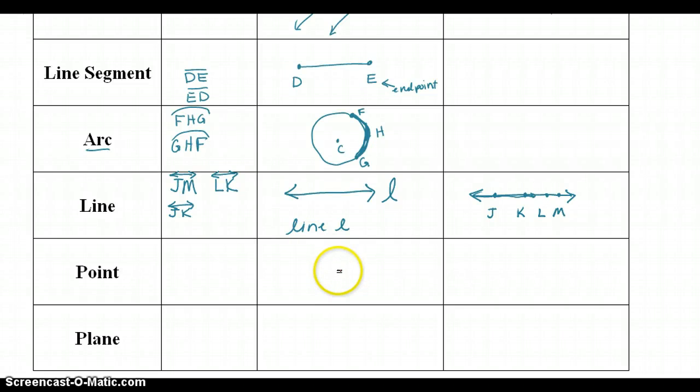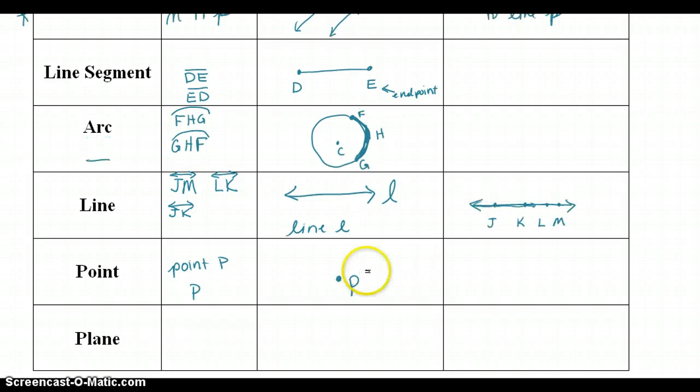We've already talked about a point. A point just looks like a dot, and it's always labeled with a capital letter. When you're writing it in a sentence or when you read it in a word problem, it will just write out the word. They'll just say point P or they'll just talk about P. Or if it happens to be the letter Q, it would be called point Q or they would just say something about the letter Q.